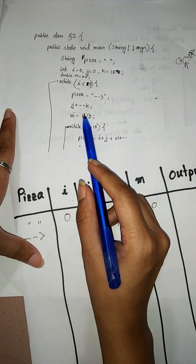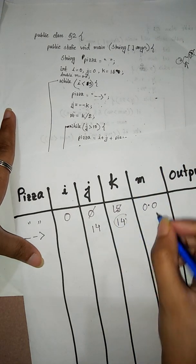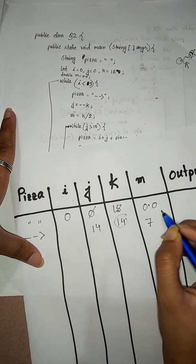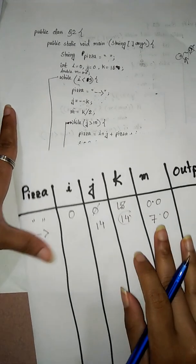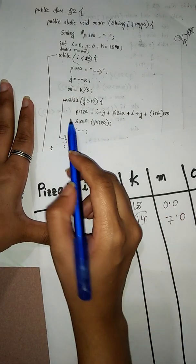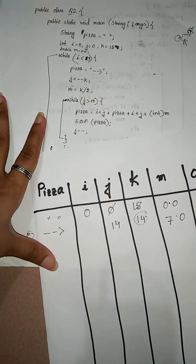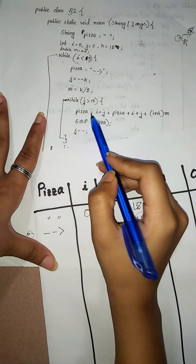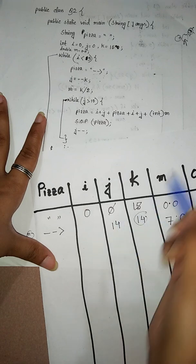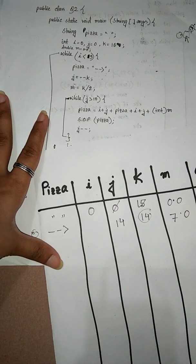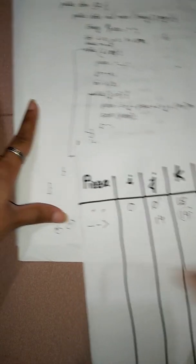So k value after decrement is going to be 14. Then m equals to k divided by 2 — k's current value 14 divided by 2 equals to 7. Then m equals to 7. Then j equals to 0. Then we check the inner loop condition: j less than 10. j is 14, which is greater than 10, so we are in the loop.